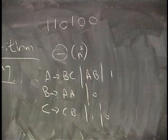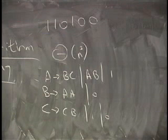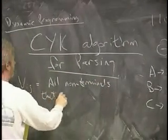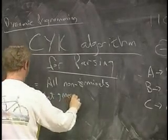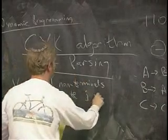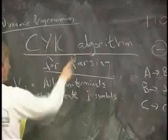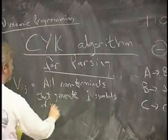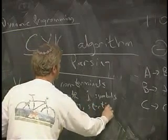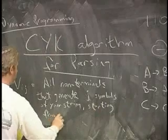We'll call this v_ij. This is going to be all the non-terminals that can generate a certain piece of this string. I'll tell you what piece in a second. All the non-terminals that generate j symbols of this string, j symbols of your string, starting from symbol i.